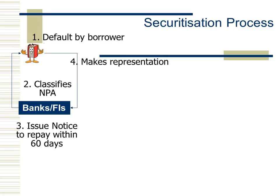The defaulting borrower is allowed to make some representations — they can go for a compounding, furnish additional security, and say that repayment will be done within an extended period of time. The bank or financial institution, as a secured creditor, can accept or reject the representation given by the borrower. Once no payment is being made by the defaulting borrower, the bank or financial institution moves to the next process.